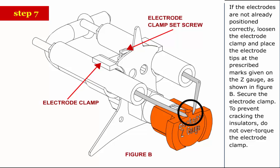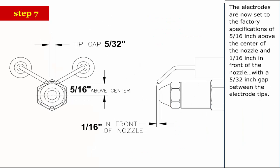To prevent cracking the insulators, do not over torque the electrode clamp. The electrodes are now set to the factory specifications of 5 sixteenths inch above the center of the nozzle and 1 sixteenths inch in front of the nozzle with a 5 thirty seconds inch gap between the electrode tips.